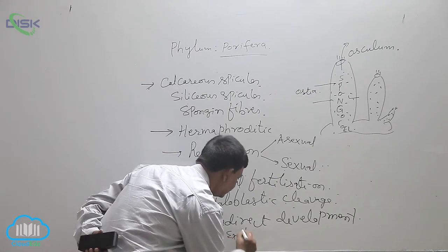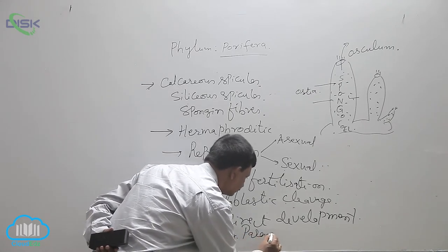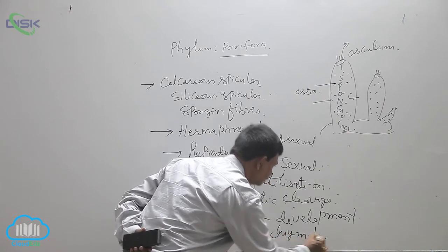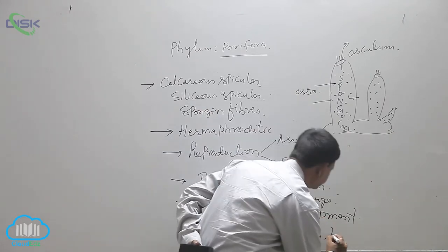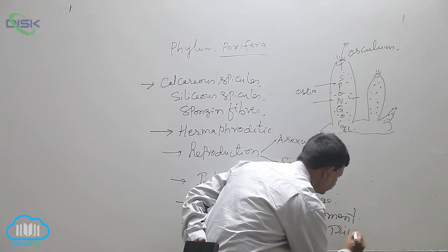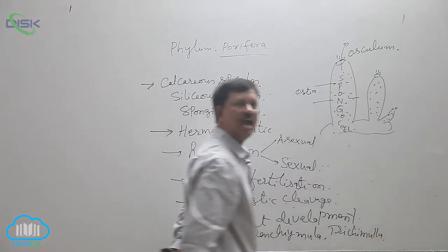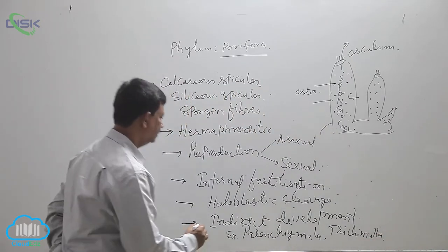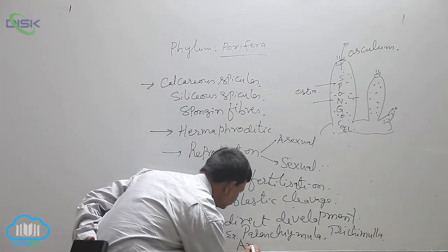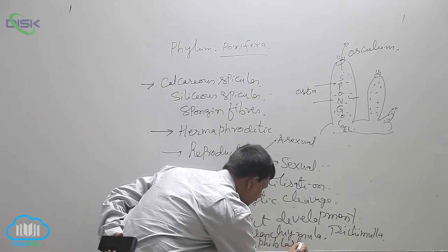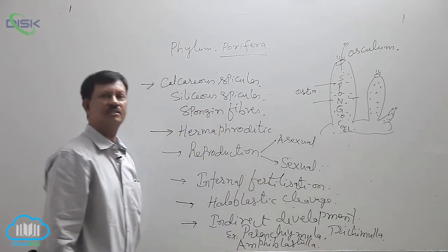This is a parenchymula larva, trichogastrula larva, and amphiblastula larva. These are the larvae.